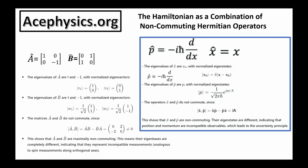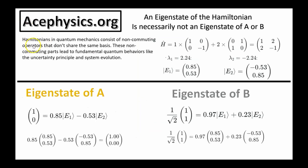Measuring one observable precisely disturbs the other. In quantum mechanics, this non-commutativity between operators underlies much of the uncertainty and probabilistic nature of the theory. Hamiltonians in quantum mechanics consist of non-commuting operators that don't share the same basis. For example, if I take a linear combination of matrix A from the previous slide and matrix B, this matrix could represent a Hamiltonian made up of a linear combination of two Hermitian matrices that don't commute.